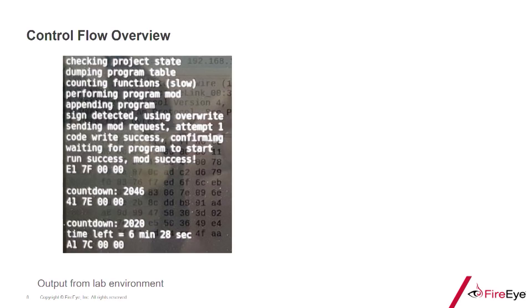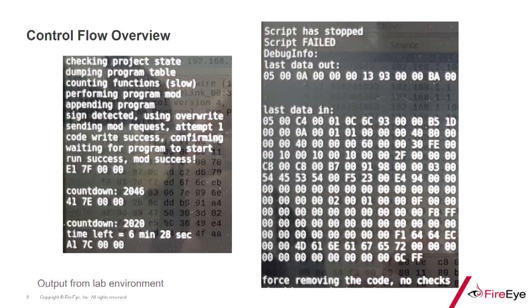In ICS-CERT's analysis, their estimation was that this was intentional — that the attackers wanted their payload to only persist in memory during a limited timeframe of the attack. Looking at the interactive output of their code running in a lab environment, it goes through its entire control flow, uploads the actual payload to memory, and indicates run success and modification success. But because the do_restore flag had been set even on success, after about a six-and-a-half-minute countdown period, it force removes its code without checking.